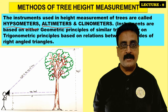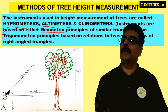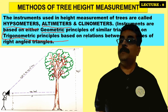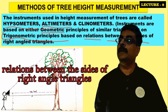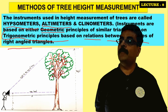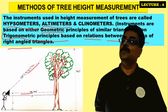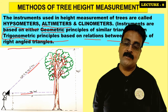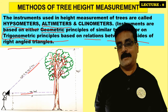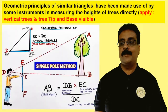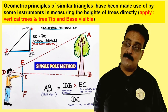Instruments are based either on geometric principles of similar triangles, or on trigonometric principles — specifically the relation between the sides of a right angle triangle. There are many trigonometric principles by which we indirectly measure height. Let's first look at the geometric principles of similar triangles, which are used by some instruments for directly measuring height.